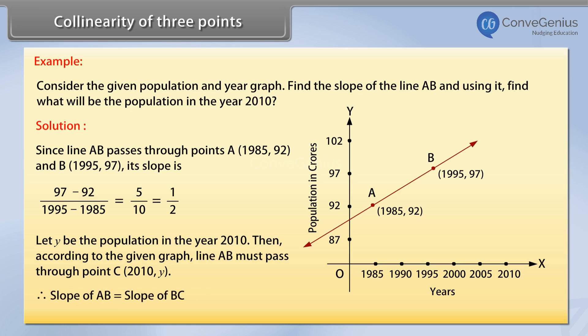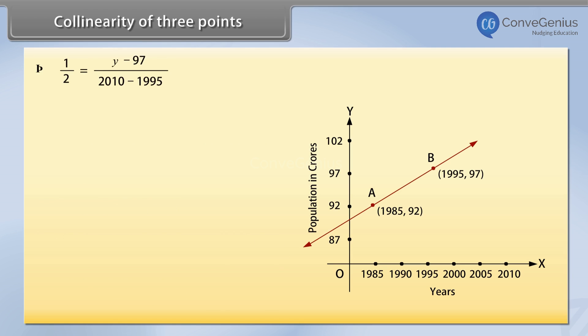Therefore slope of AB is equal to slope of BC. 1 by 2 is equal to Y minus 97 divided by 2010 minus 1995.